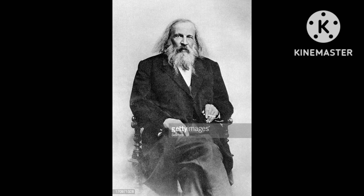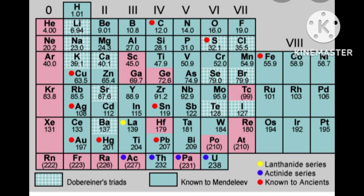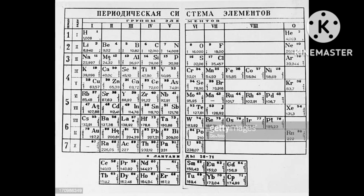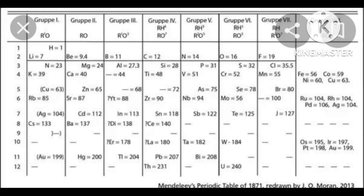The periodic table was developed by the Russian chemist Dmitri Mendeleev in 1869. He discovered 63 elements and arranged them in the periodic table according to increasing order of their atomic masses. Since the table was incomplete, Mendeleev predicted the positions of missing elements: Eka-boron for scandium, Eka-aluminium for gallium, and Eka-silicon for germanium.